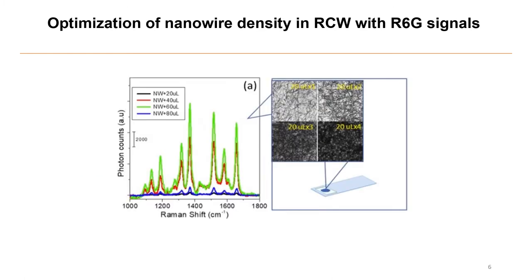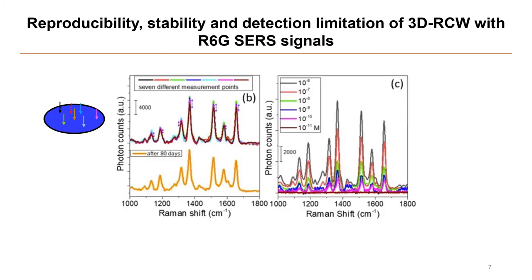To evaluate the performance of the 3D RCW substrate, a common standard chemical, rhodamine-6G (R6G), was used to test its Raman signal at different densities of nanowires. An optimized nanowire amount results in an enhanced SERS response from R6G. SERS measurements were performed on seven different positions and averaged, with spectra consistently assured. The stable nature of the platform is also evident from measurements performed after 18 days.